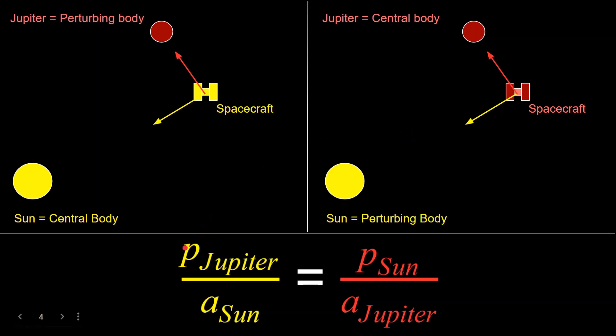We can then define these ratios of how large the perturbing acceleration is from each body as compared to the central body acceleration. The sphere of influence of a body, Jupiter in this case, is defined where these two separate ratios are set equal to each other. When we model the Sun as a central body, the ratio of Jupiter's gravitational perturbation to the Sun's gravitational acceleration is equal to, when we model Jupiter as a central body, the ratio of the Sun's gravitational perturbation to Jupiter's central body acceleration. This is where the sphere of influence comes from, at the position of the spacecraft when these two ratios are equal to each other.